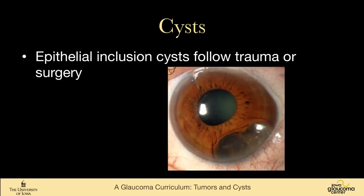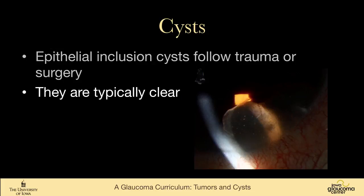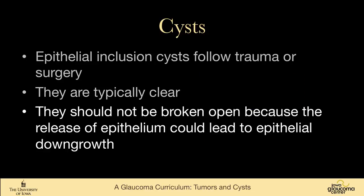Differentiate pigment epithelial cysts from epithelial inclusion cysts. This patient had an express shunt trabeculectomy and developed a very large epithelial inclusion cyst, presumably from the paracentesis. These are typically clear — with a slit beam you can see both the front and back walls — though in this particular cyst you can see debris within it. It's very important not to rupture these epithelial inclusion cysts, because that can release epithelium into the anterior chamber and lead to epithelial downgrowth.